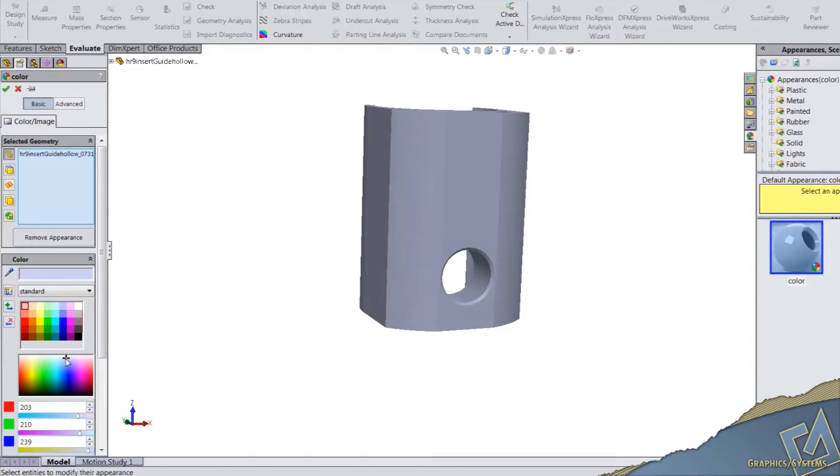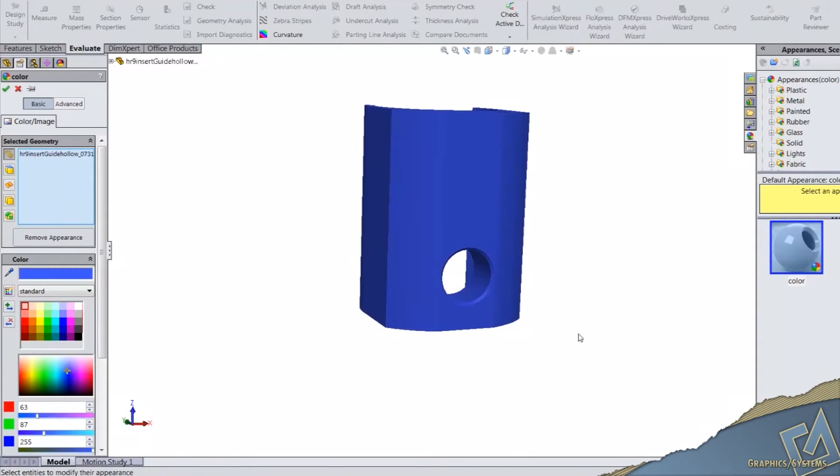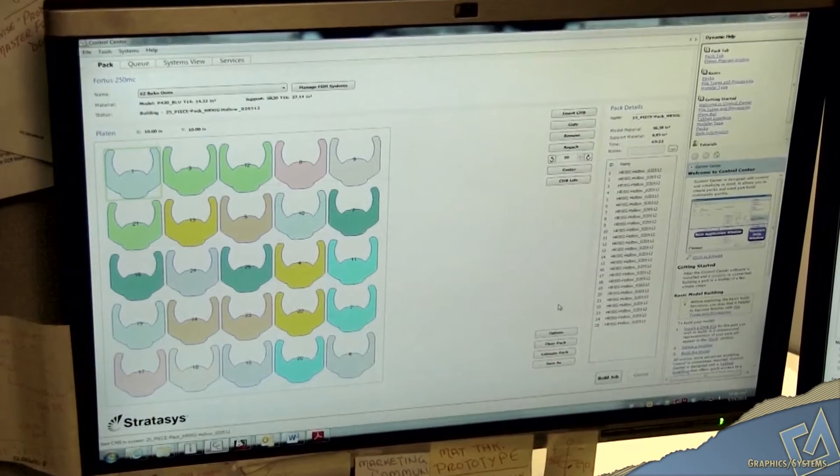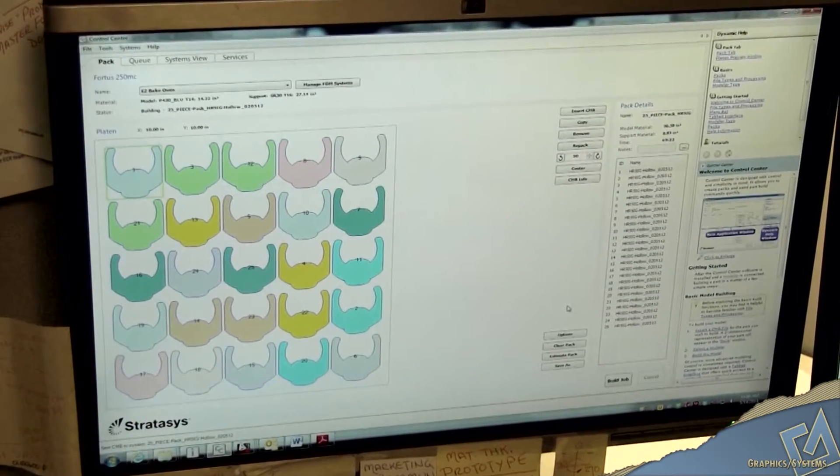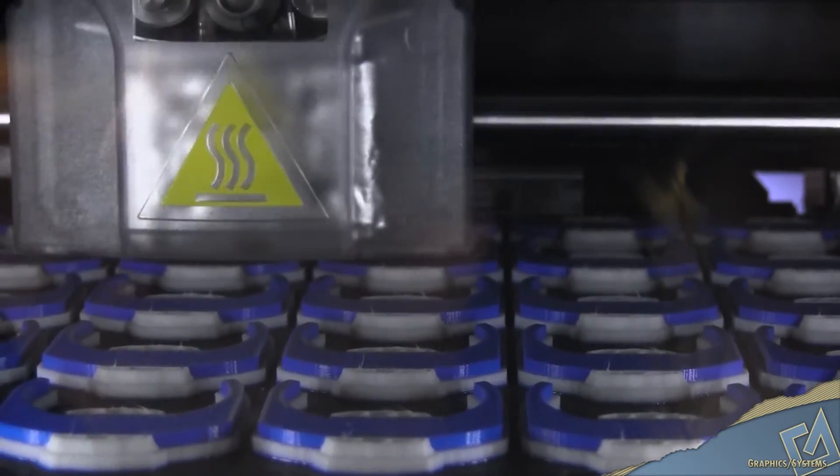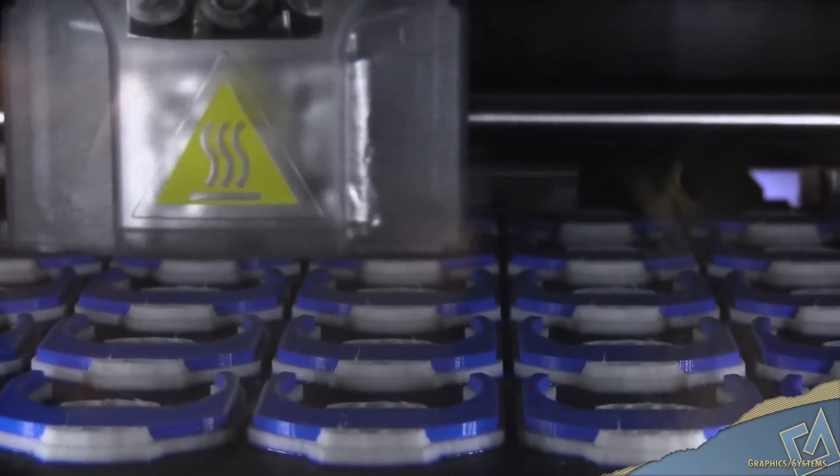The neat thing about the Fortis 3D printer is we can do multiple different prototypes within the same build, or many times we're building 20, 30 of the same prototype and we can utilize the one build just on all those same parts.